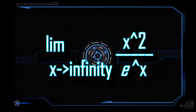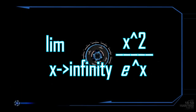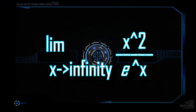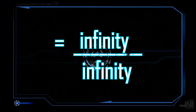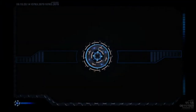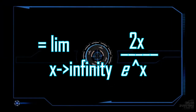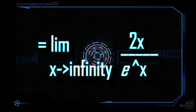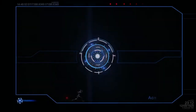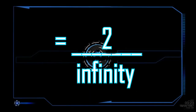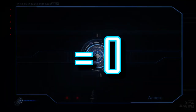Let us take a look at this example. The given is the limit of x² over e raised to x as x approaches infinity. Substituting would give us the indeterminate form infinity over infinity. So we use L'Hôpital's rule. Getting the derivative of x² over eˣ would result to 2x over eˣ. This would still result in the indeterminate form, so we use L'Hôpital's rule once again. Getting its derivative again, we find ourselves with the answer 2 over eˣ. Substituting would then give us 2 over infinity, or simply 0.